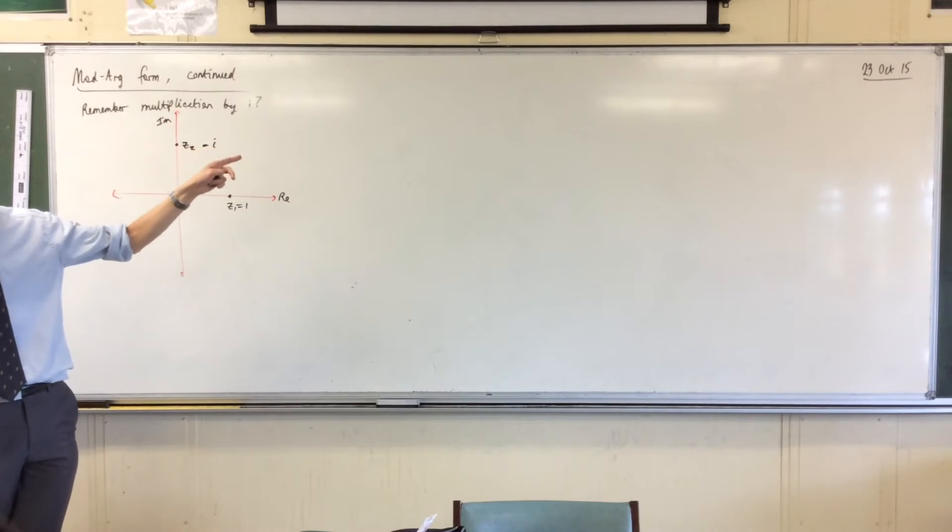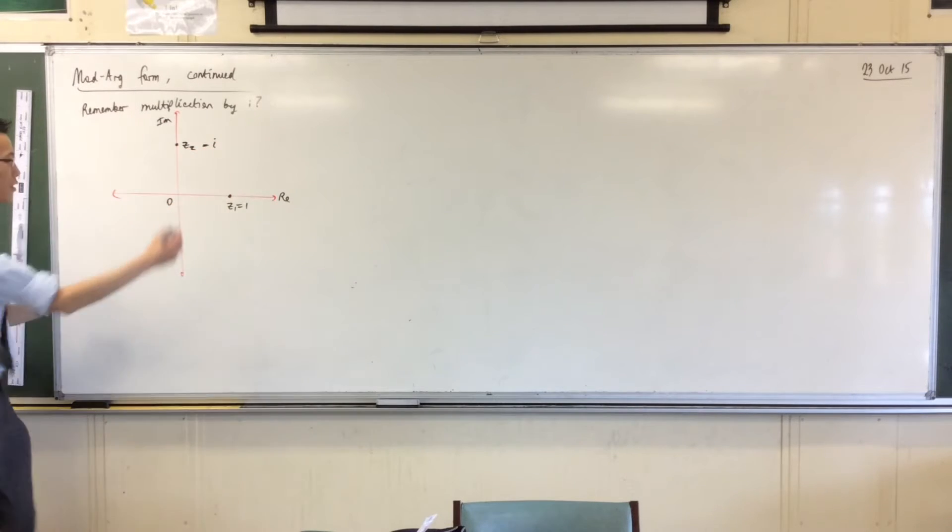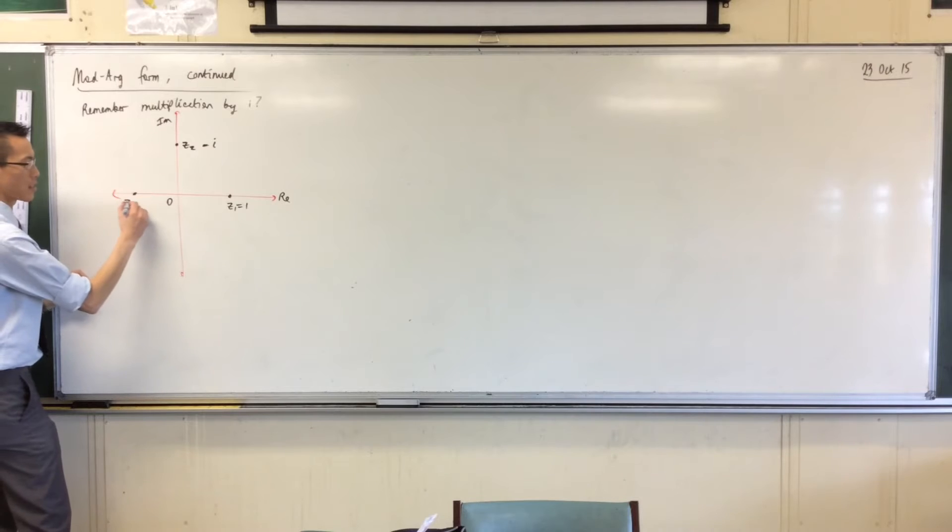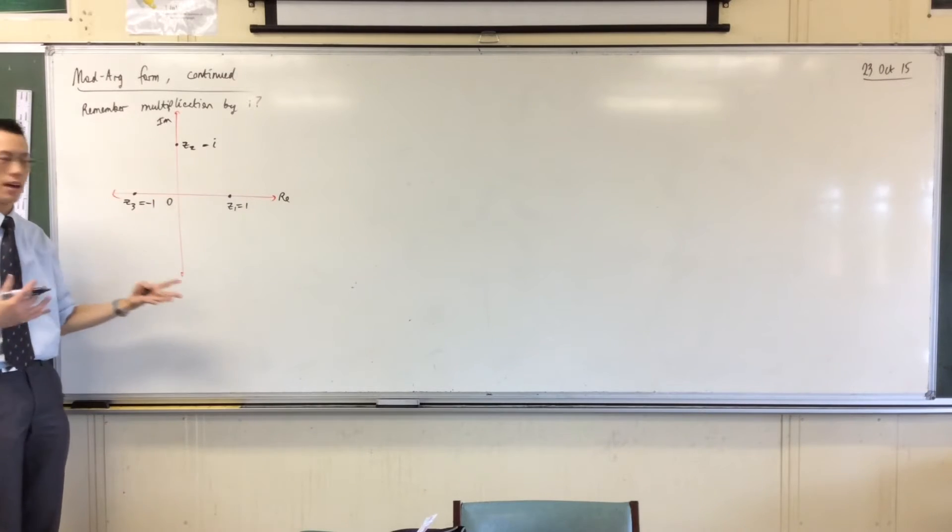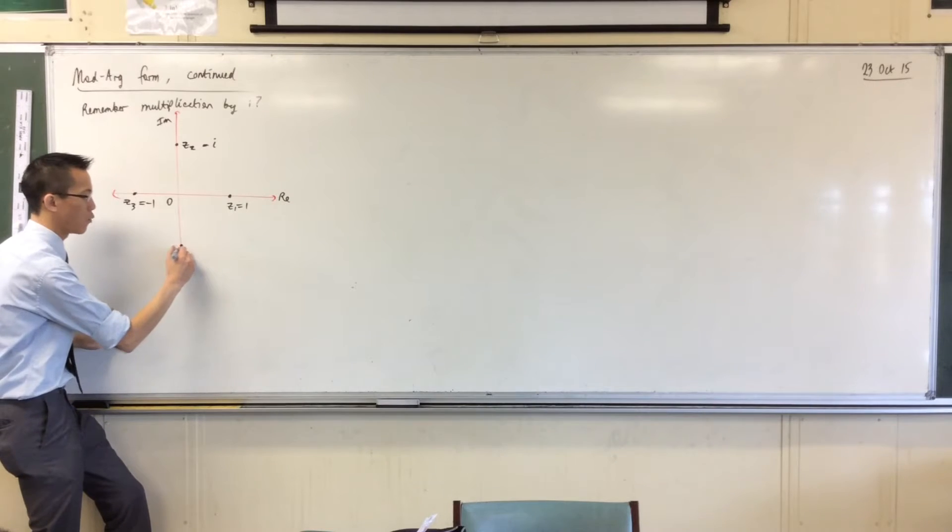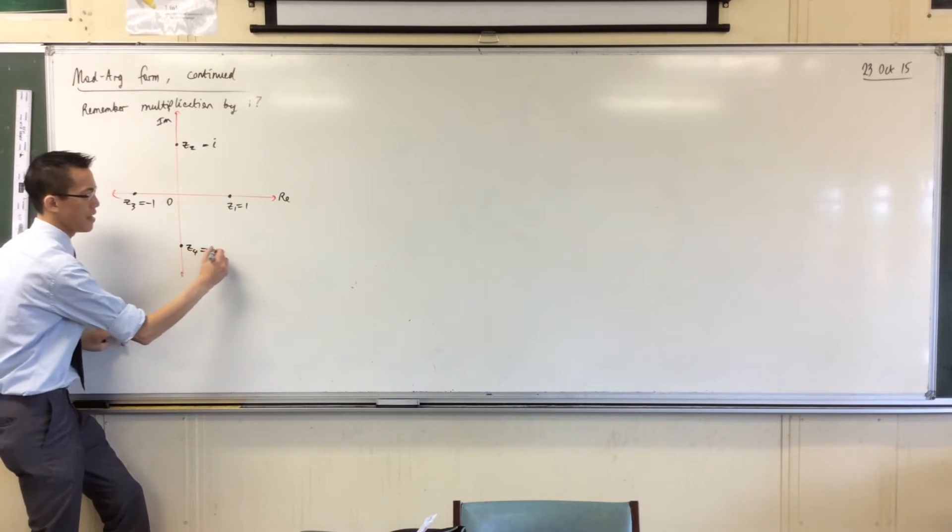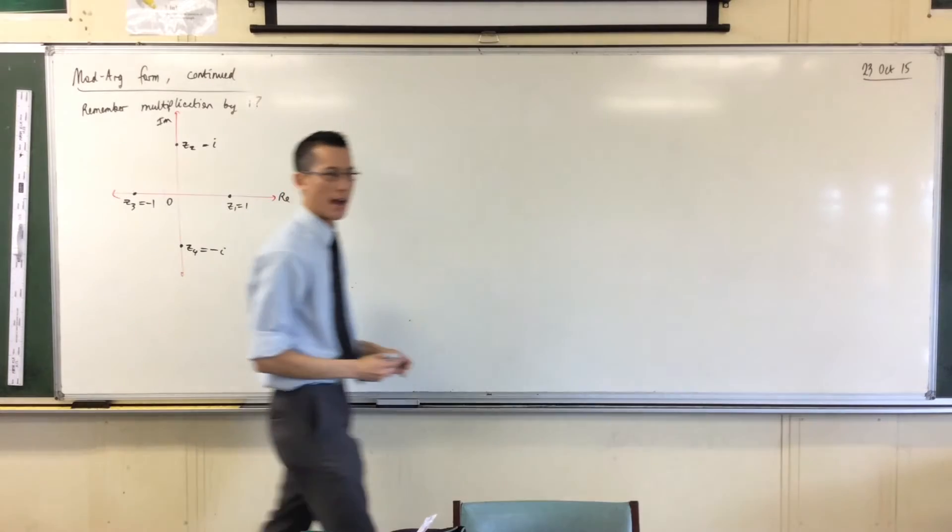Multiply Z2 by i again and that gives you negative one. So that's over here. That's purely real. So I'm back on the real axis. And then our last time, if you go multiply by i one more time, that's when you get negative i, okay?